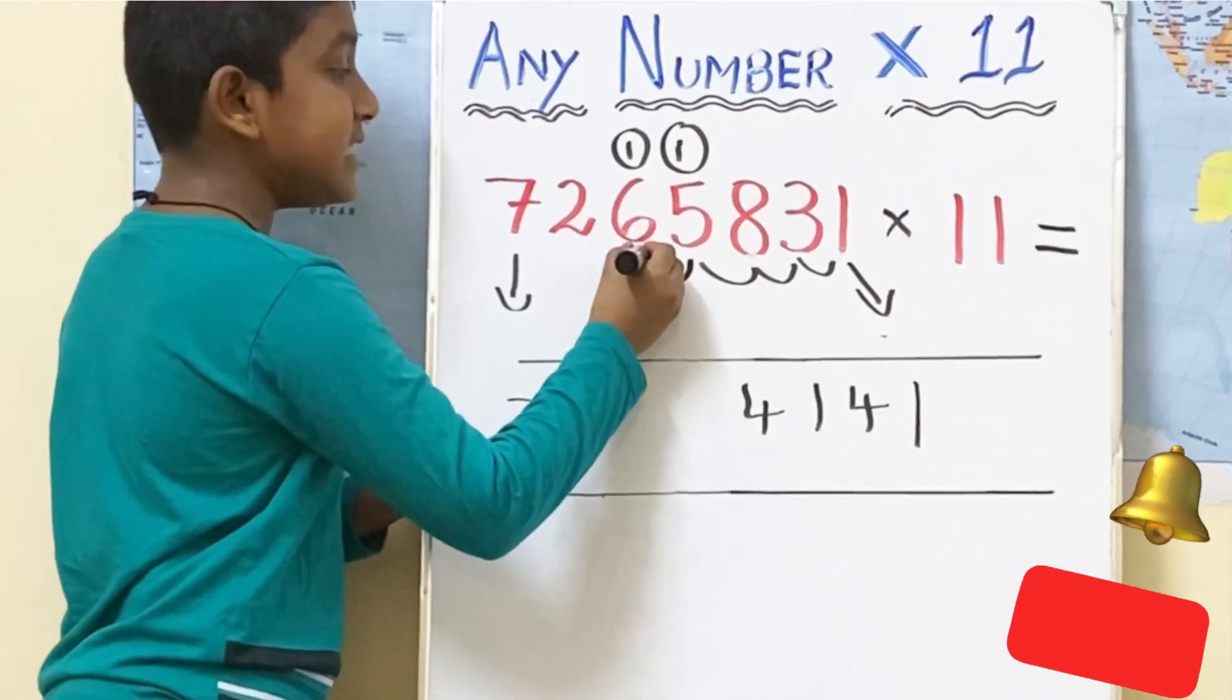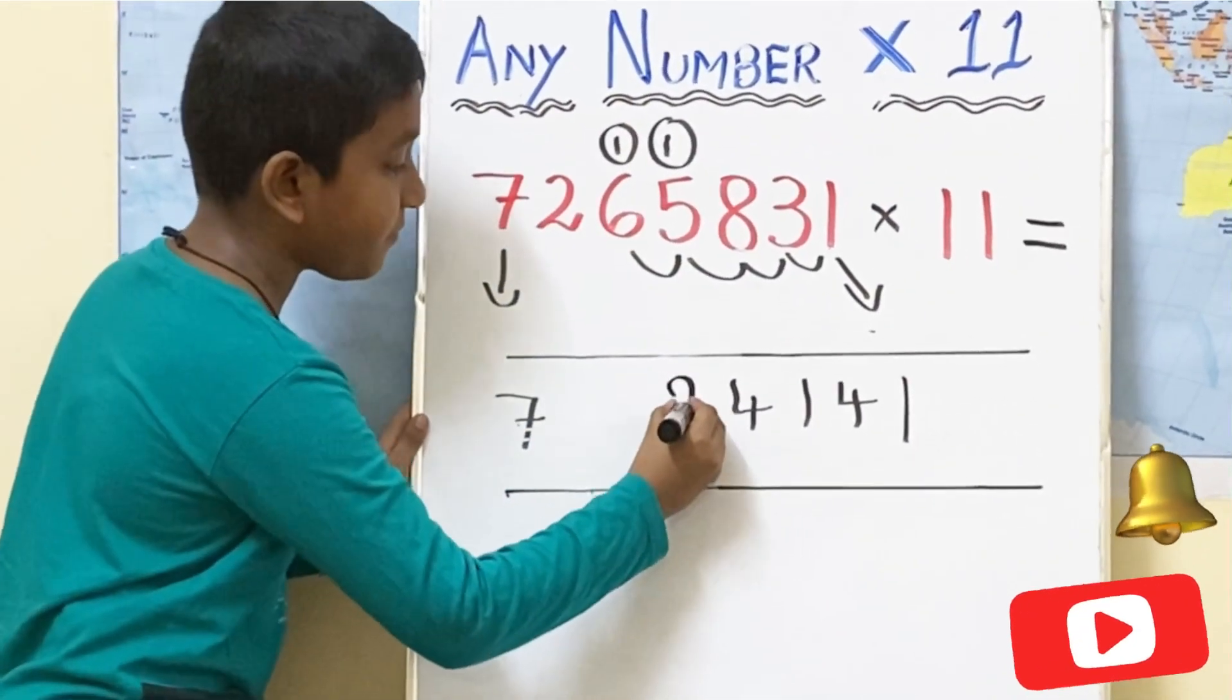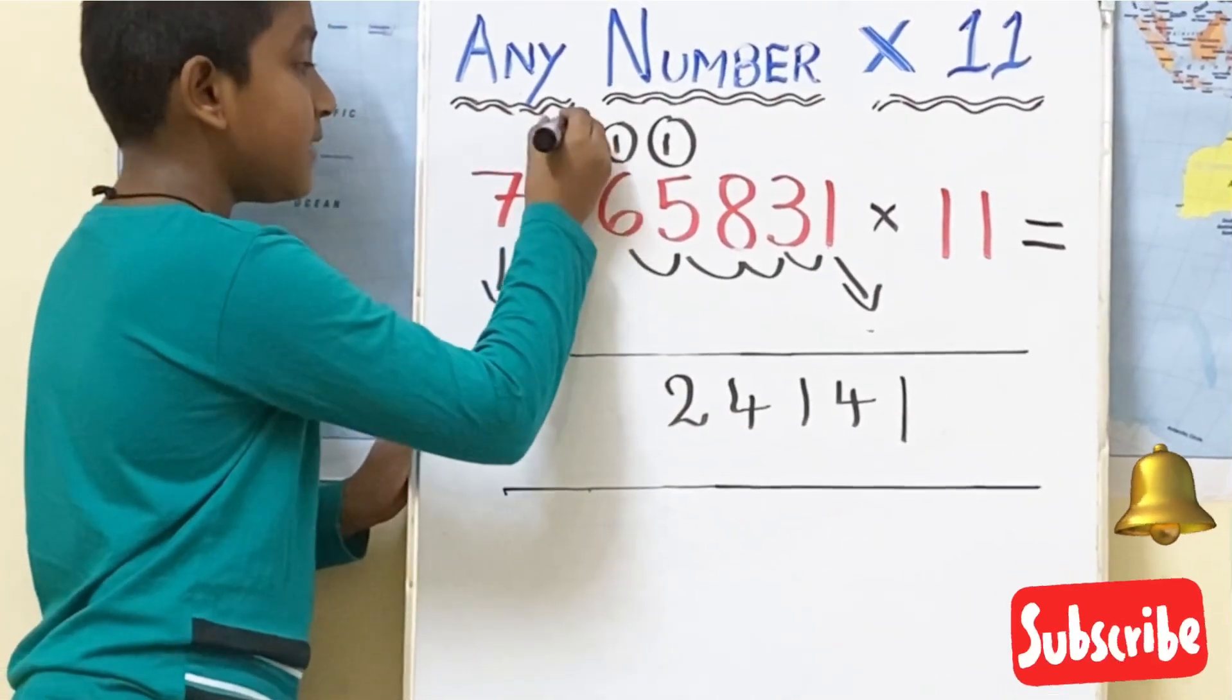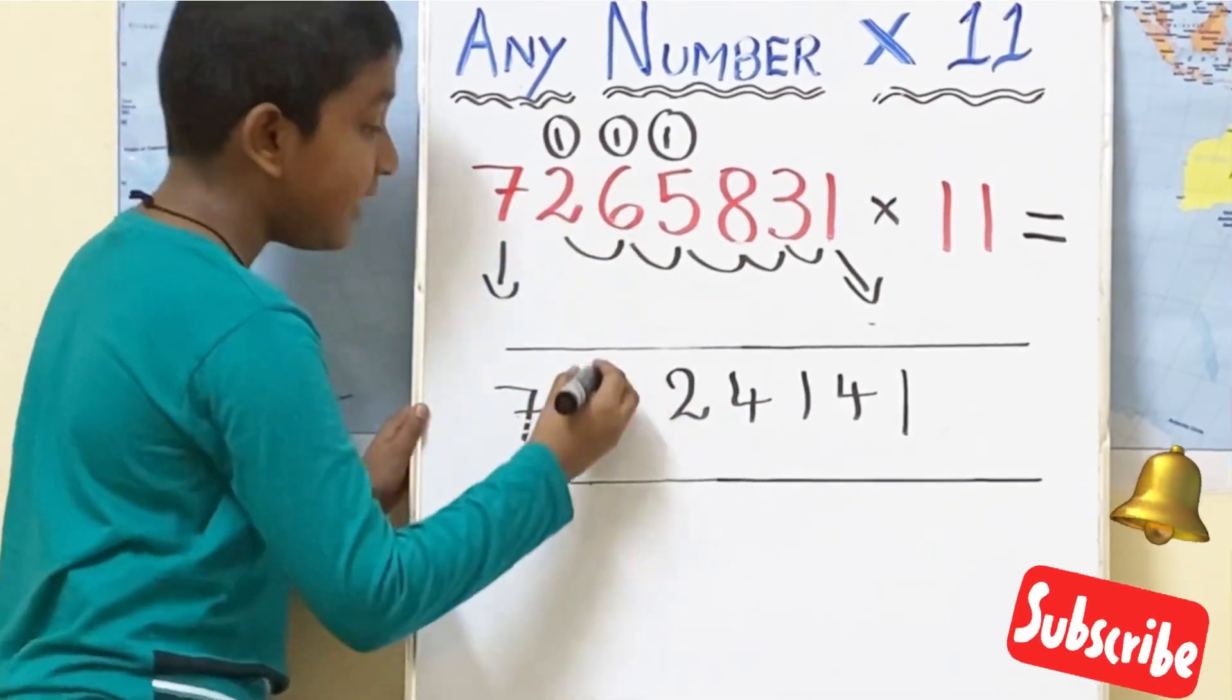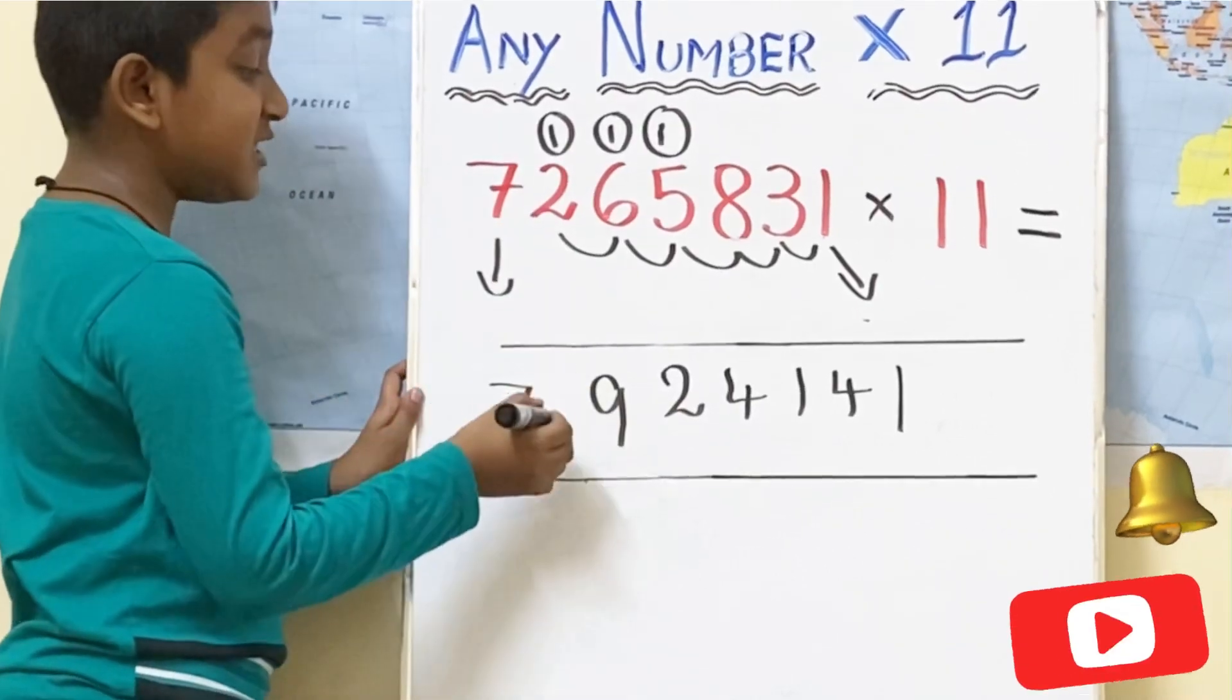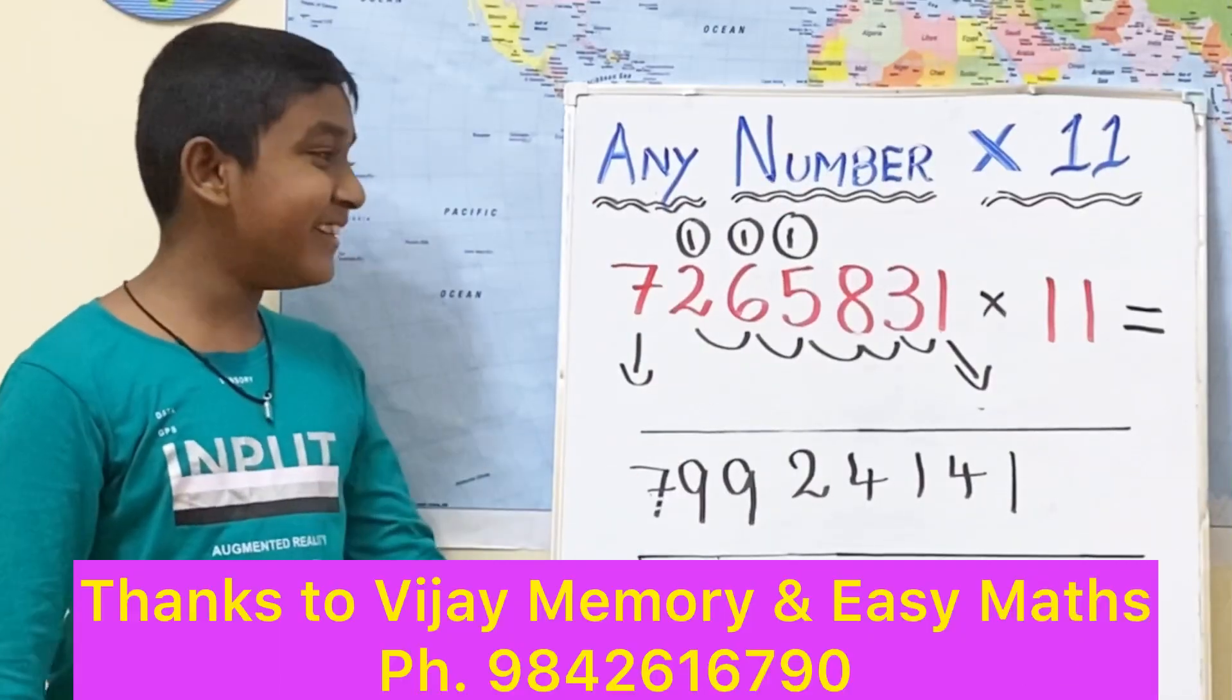5 plus 6 is equal to 11. 11 plus 1 is equal to 12. Carry over 1. 6 plus 2 is equal to 8. 8 plus 1, 9. 2 plus 7 is equal to 9. Here we got the answer.